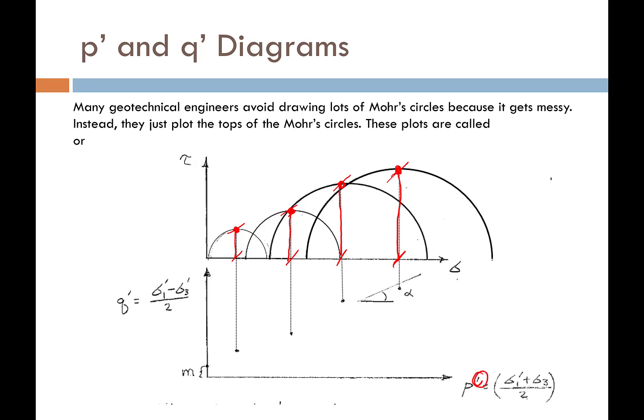The prime notation you'll see — p-prime and q-prime — indicates that these circles correspond to the effective stresses on the soil element. I could also have p and q without the primes, and those would correspond to the total stresses acting on my soil element. But for this diagram, these are effective stresses.